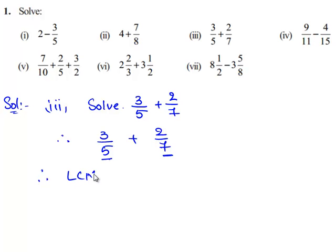Therefore LCM of 5 and 7 is equal to 5 times 7 that is 35.